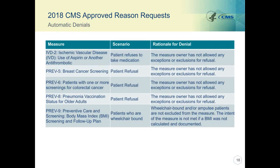This slide shows examples of automatic denials — situations where we have previously received many skip requests that will not be approved. For IVD2, PREV-5, PREV-6, and PREV-8, if these are not completed due to patient refusal, this is not an allowable skip request, as the measure owner has not allowed any exceptions or exclusions for refusal. For PREV-9, patients who are wheelchair-bound or amputees are not excluded from this measure. The intent of the measure is not met if the BMI was not calculated and documented.